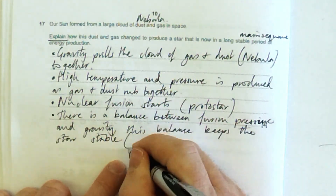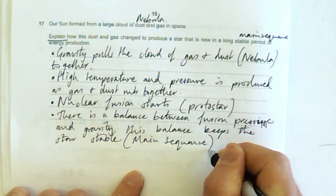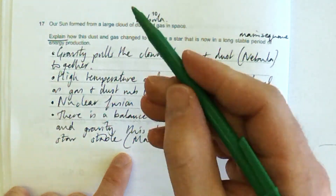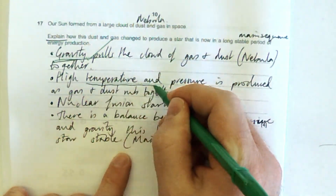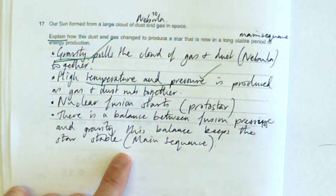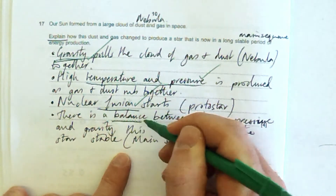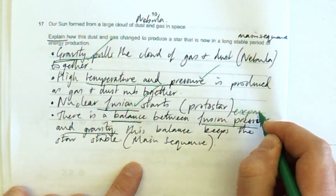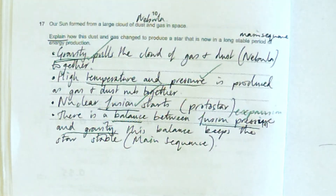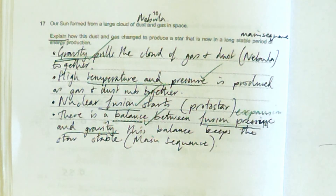I've written the main sequence stage for clarity. The marks here are: gravity being the thing that pulls the cloud of gas and dust together; high temperature and pressure as the conditions needed for nuclear fusion; fusion starting; and a balance between two forces. The outward force can be called fusion pressure, expansion force, or radiation pressure — but the key point is the balance between the two forces, and that's the reason for the star being stable.